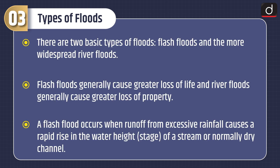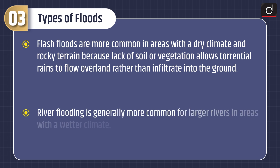There are two basic types of floods: flash floods and the more widespread river floods. Flash floods generally cause greater loss of life, while river floods generally cause greater loss of property. A flash flood occurs when runoff from excessive rainfall causes a rapid rise in water level in a stream or normally dry channel, and they are more common in areas with dry climates and rocky terrain.